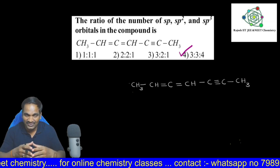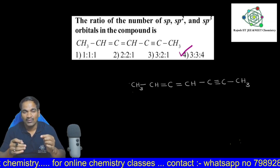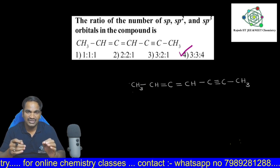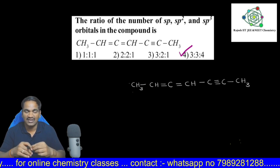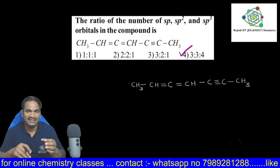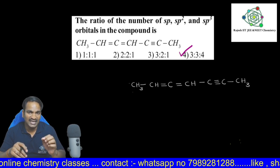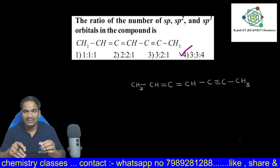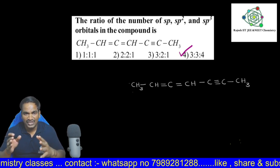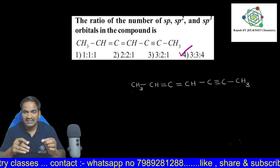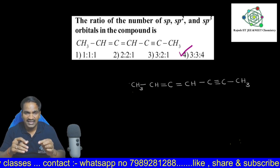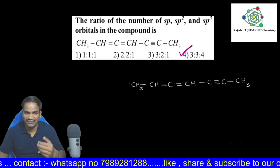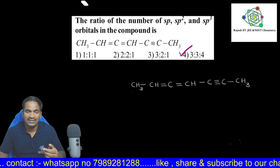Hello students, today we are going to solve one organic chemistry question from GOC — General Organic Chemistry. In this question they gave one hydrocarbon and they are asking about hybridization ratios. First we check which type of hybridizations are there in this given hydrocarbon.